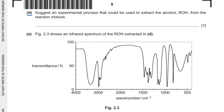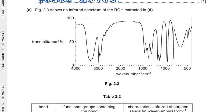The sub question D is suggest an experimental process that could be used to extract the alcohol ROH from the reaction mixture. Now we know that the reaction mixture contains alcohol, contains acid and also contains the ester. So there is a mixture of three liquids or you can say it's in the aqueous form and if you want to separate the alcohol the best separating technique is fractional distillation. Fractional distillation is used where we have mixture of various liquids or gases also. So fractional distillation can be used to separate the alcohol.